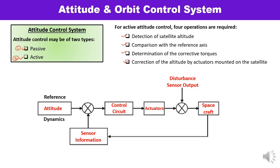These four steps are illustrated in a diagram. The reference attitude data enters at the input. At point one we have the reference, and at point two a comparison is done — the sensor information from the spacecraft is compared with the reference attitude. If there is any difference, the control circuitry helps evaluate how much torque is required. Then correction is performed with the help of actuators mounted on the body of the satellite. This is how active attitude control operation is performed.